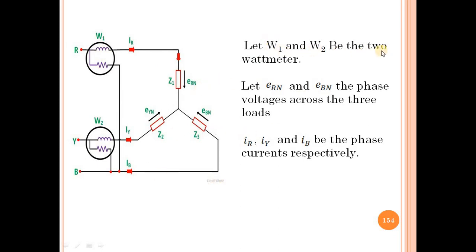Let W1 and W2 be the two wattmeters. Let ERN, EYN, and EBN be the phase voltages across the three loads, and let IR, IY, and IB be the phase currents respectively.